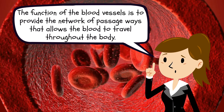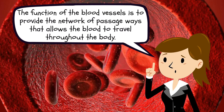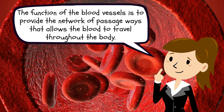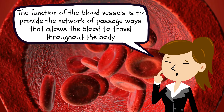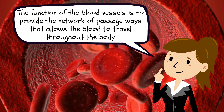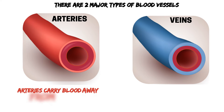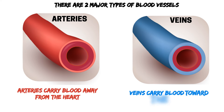The function of the blood vessels is to provide the network of passageways that allows the blood to travel throughout the body. There are two major types of blood vessels: arteries and veins. Arteries carry blood away from the heart and veins carry blood toward the heart.